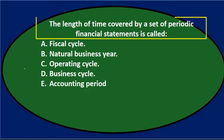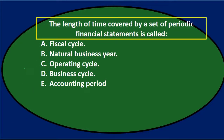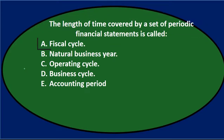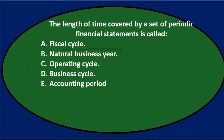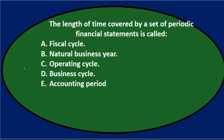Next question: the length of time covered by a set of periodic financial statements is called: A, fiscal cycle; B, natural business year; C, operating cycle; D, business cycle; and E, accounting period.